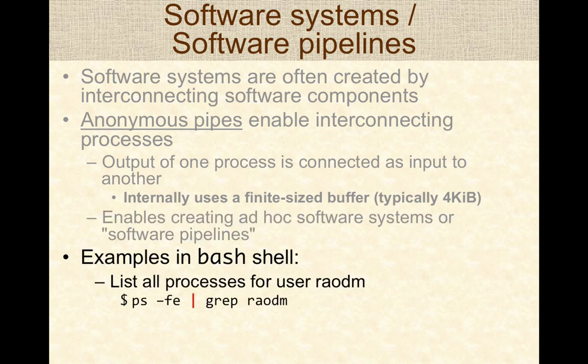In the bash shell, the pipe character can be used to connect or pipe the output of one process to another. For example, the output of the ps command is piped as the input to the grep command. So in this case, grep searches for the string rowdm in the output of the ps command.